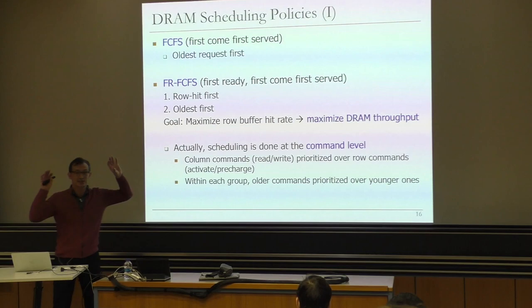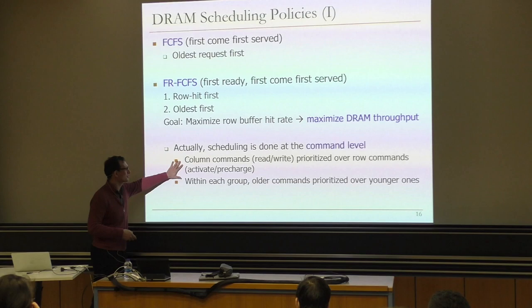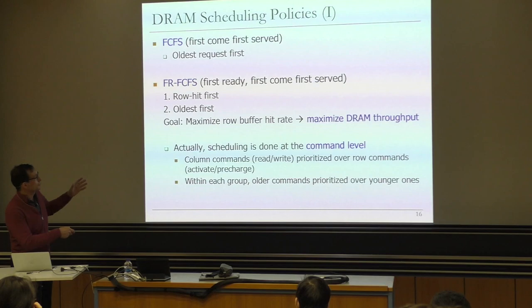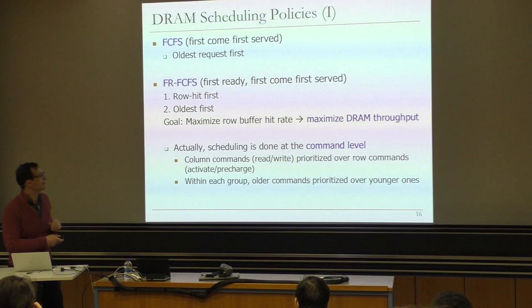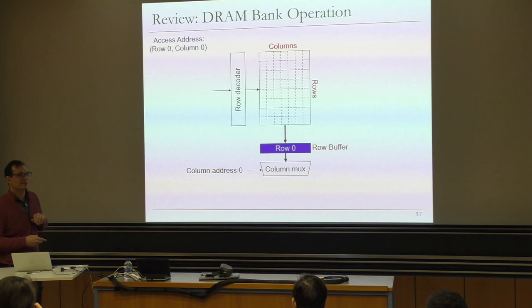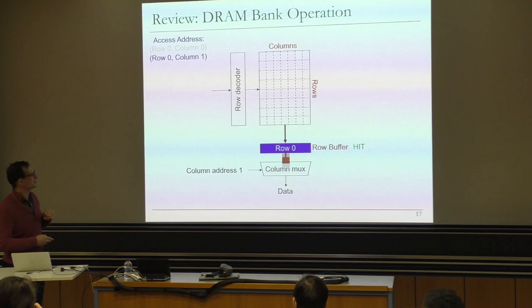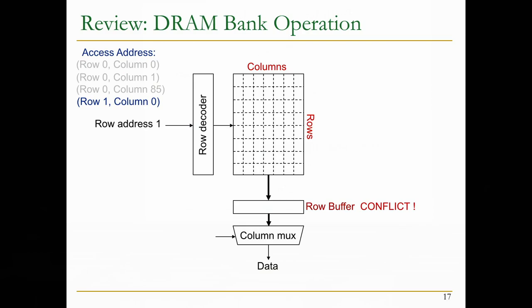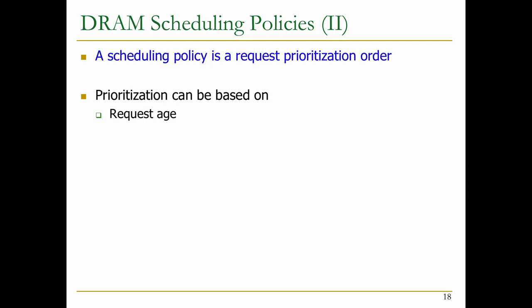A scheduling policy is essentially a prioritization order, and this prioritization can be based on many things — you can exercise your creativity here. It could be based on request age — that's first-come-first-serve, older first. Row buffer hit/miss status. Request type — is it a read, a write, or a prefetch? A prefetch tries to bring data before it's really requested by the processor. How do you order prefetches compared to reads and writes? It turns out there is no simple answer — being adaptive is the right approach. You want to adapt to the accuracy of the prefetch request and the status of the DRAM itself.